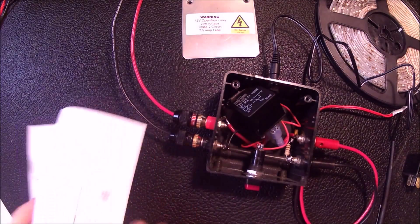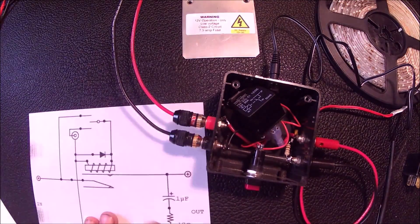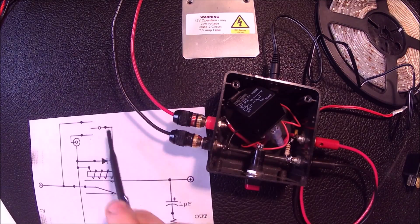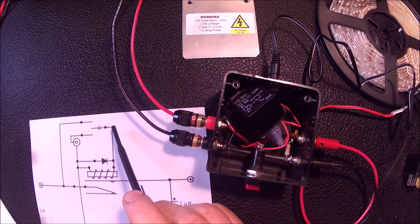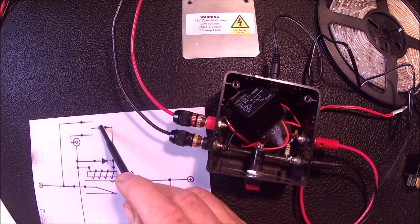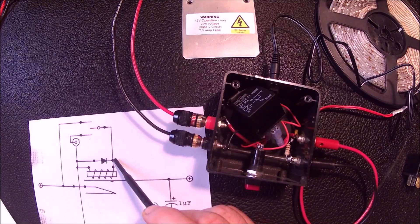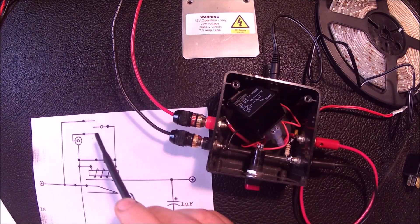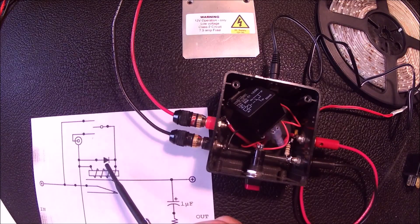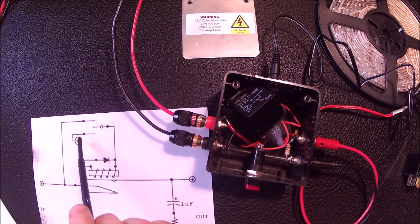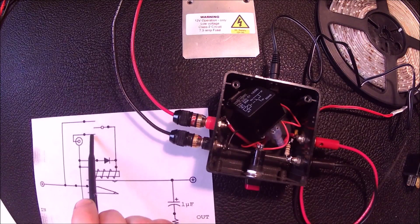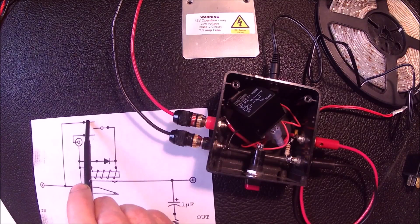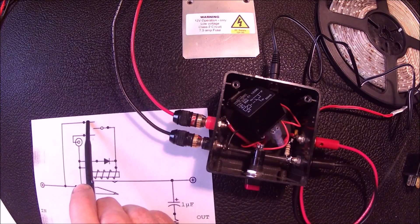To be even safer you could use a single pole double throw switch here. And this is an alternate schematic. In that case what you want to do is you would connect the relay coil to the center terminal of the switch. And if you use an on, off, on type of switch you could have a remote operation down here. In the middle you would have a manual off. And up here you would have a manual on mode.